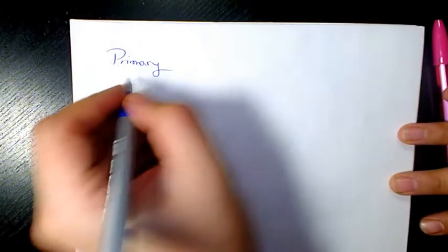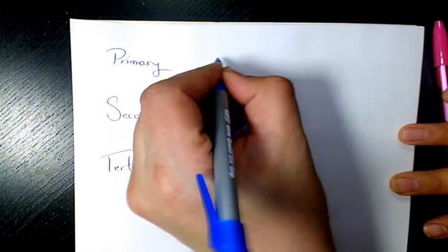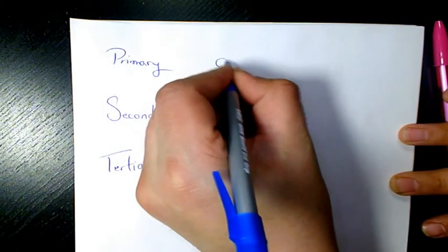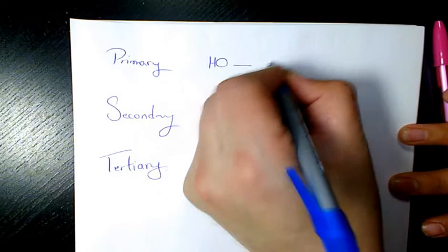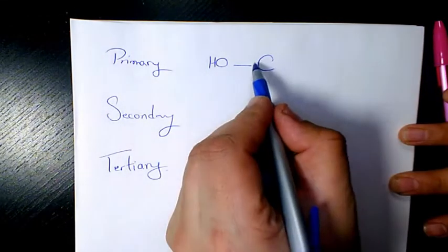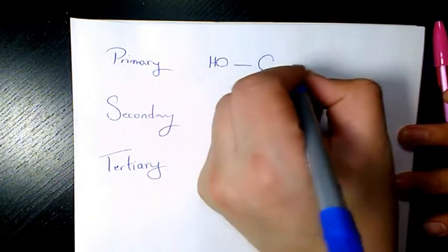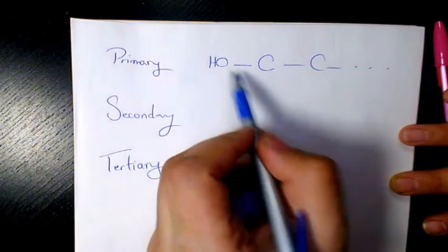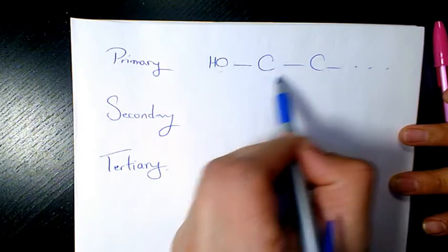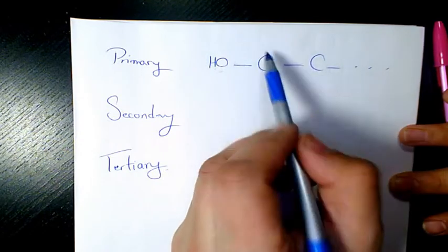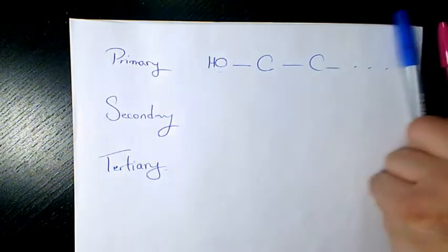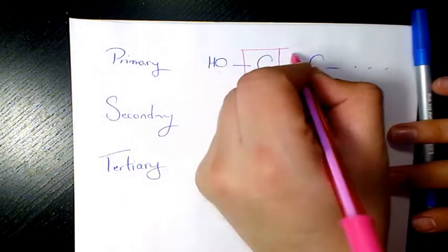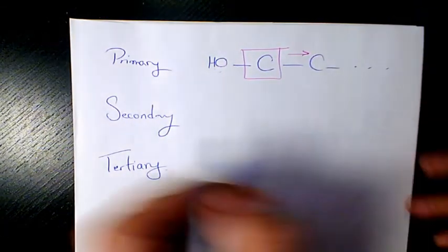What's the difference? When we're dealing with primary alcohol, it means the hydroxy group connects to a carbon, and this carbon connects to only one other carbon. So the OH group connects to one carbon, which connects to just one other carbon.